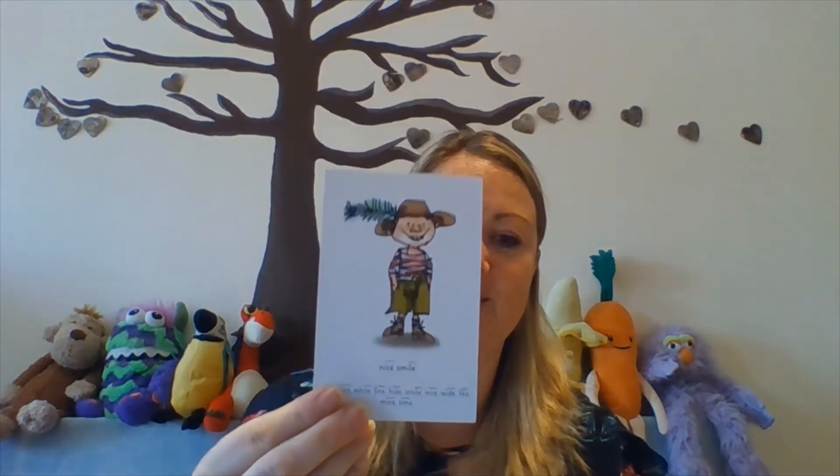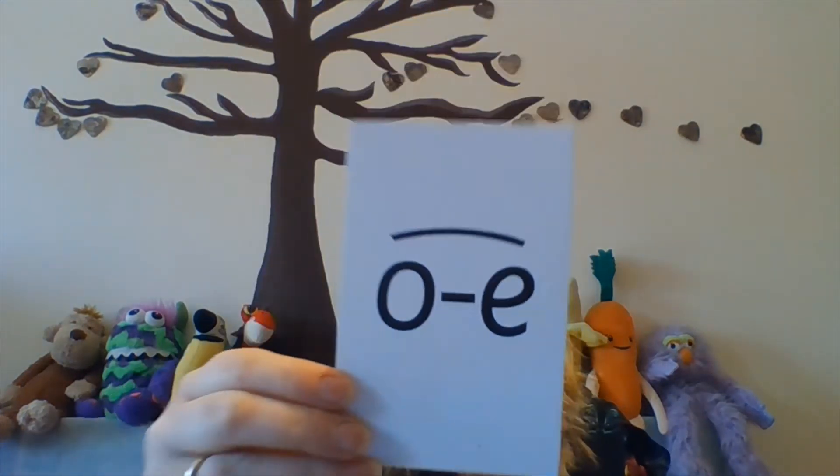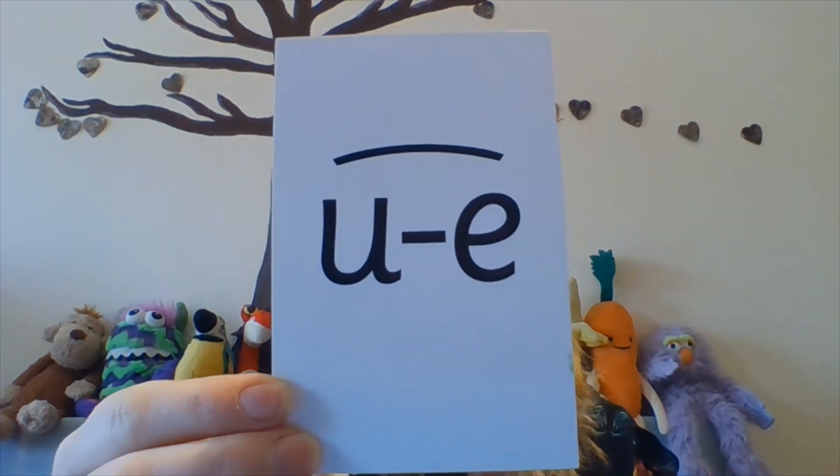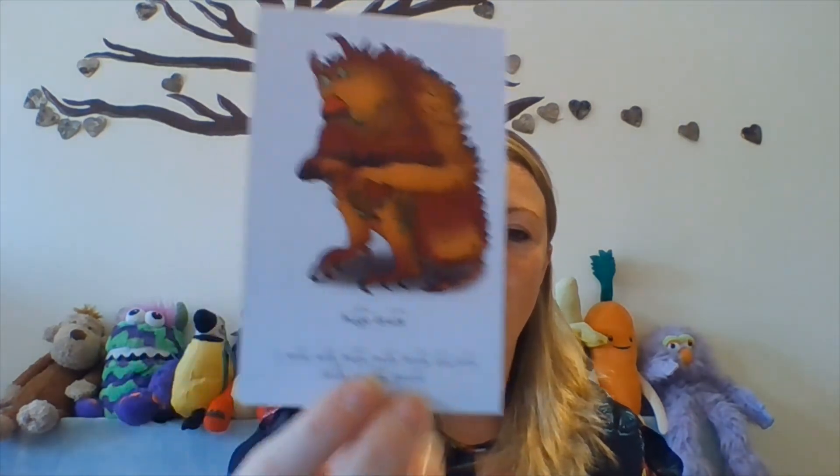'i_e' — nice smile. 'o_e' — phone home. 'u_e' — huge brute. That's the really tricky one that we all find difficult because you have to tweak it — it says 'rude,' it says 'tune,' it says 'use,' it says 'June,' but they all sound slightly different.